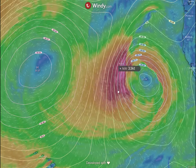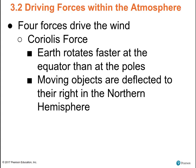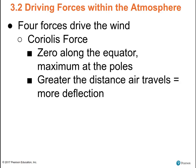Coriolis force is the third force. It's caused because Earth rotates faster at the equator than at the poles. The most important thing to remember about Coriolis force is that moving objects are deflected to their right in the northern hemisphere — to their right as they move, not a fixed right. Objects in the southern hemisphere are deflected to their left. Coriolis force is zero at the equator and increases as you move toward the poles. The greater the distance the air travels, the greater the Coriolis deflection.